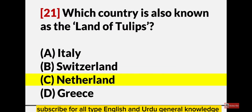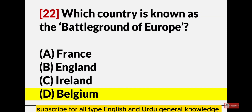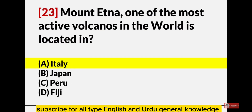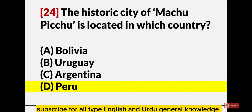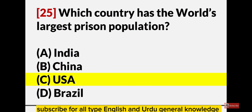Which country is also known as the land of tulips? Netherlands. Which country is known as the battleground of Europe? Belgium. Mount Etna, one of the most active volcanoes in the world, is located in Italy. The historic city of Machu Picchu is located in which country? Peru. Which country has the world's largest population? USA.